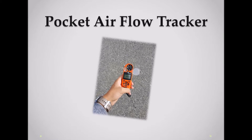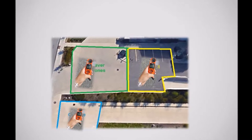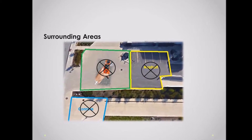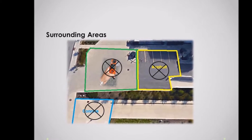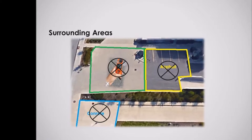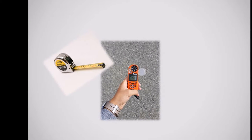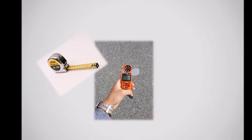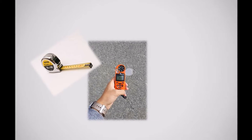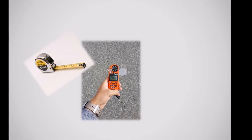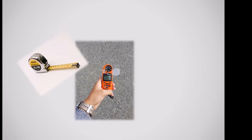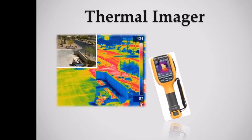The pocket air flow tractor is used to determine the surrounding air temperature of the three testing samples. The pocket air flow tractor is held roughly 12 inches, or a foot, above the testing surface until we reach a consistent temperature.